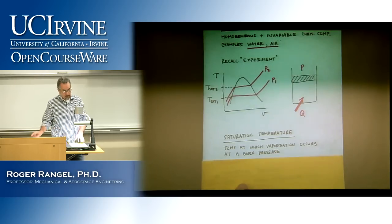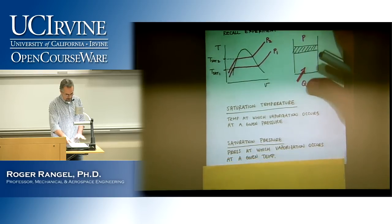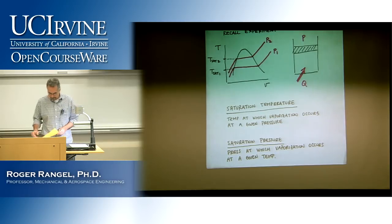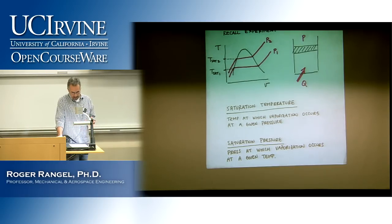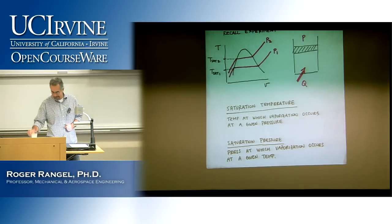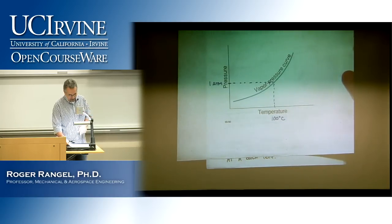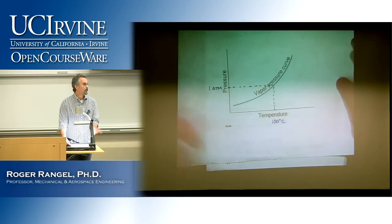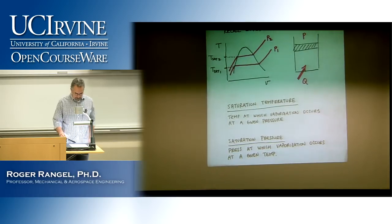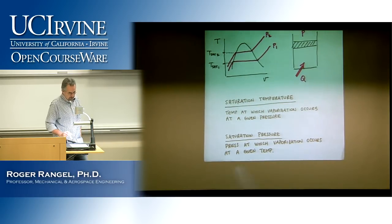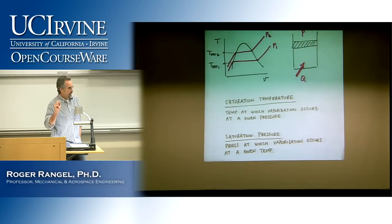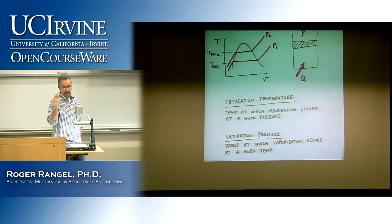I can also ask the question the other way around, which defines saturation pressure. Saturation pressure is the pressure at which vaporization occurs at a given temperature. If you ask what is the saturation pressure at 100°C, the answer is 1 atmosphere. It's the same thing depending on which value you go in with — you can give me the temperature and I tell you the pressure, or vice versa. The key point is that these two properties are linked at the moment of vaporization.